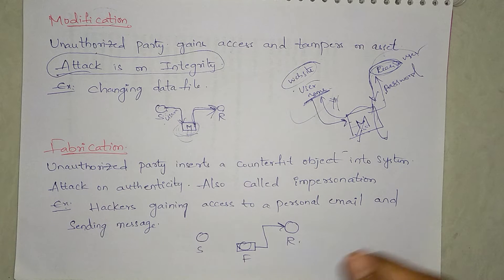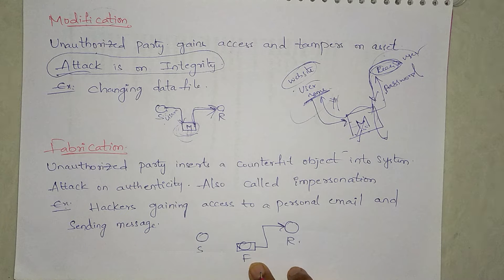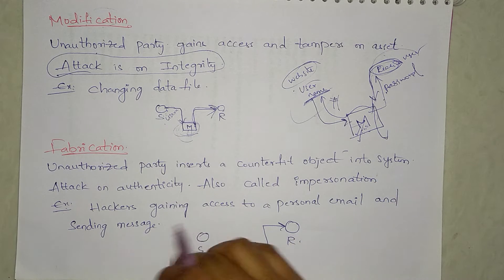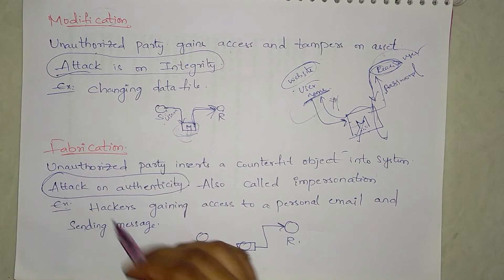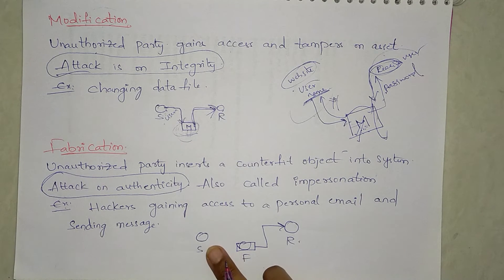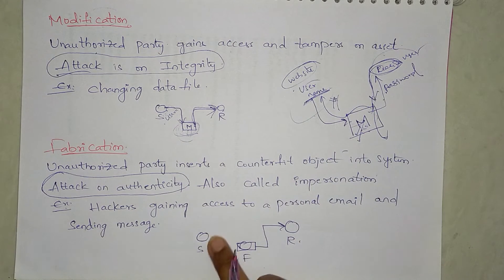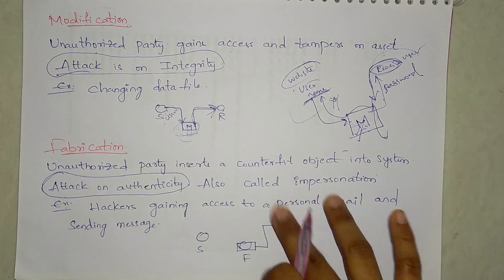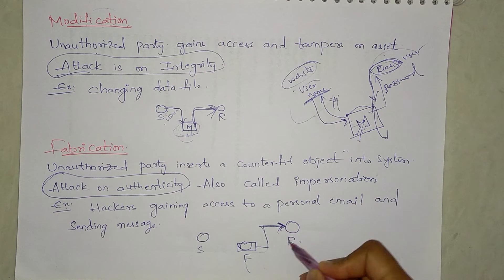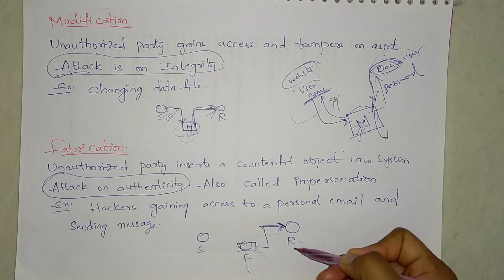Fabrication means the sender does not send data at all, but the middle attacker recreates the situation as if the sender is sending to the receiver — they just act as the sender. It is an attack on authenticity. Authenticity is a kind of proof or verification of the user. For example, a website is not asking for your username or password — you can just view the products.